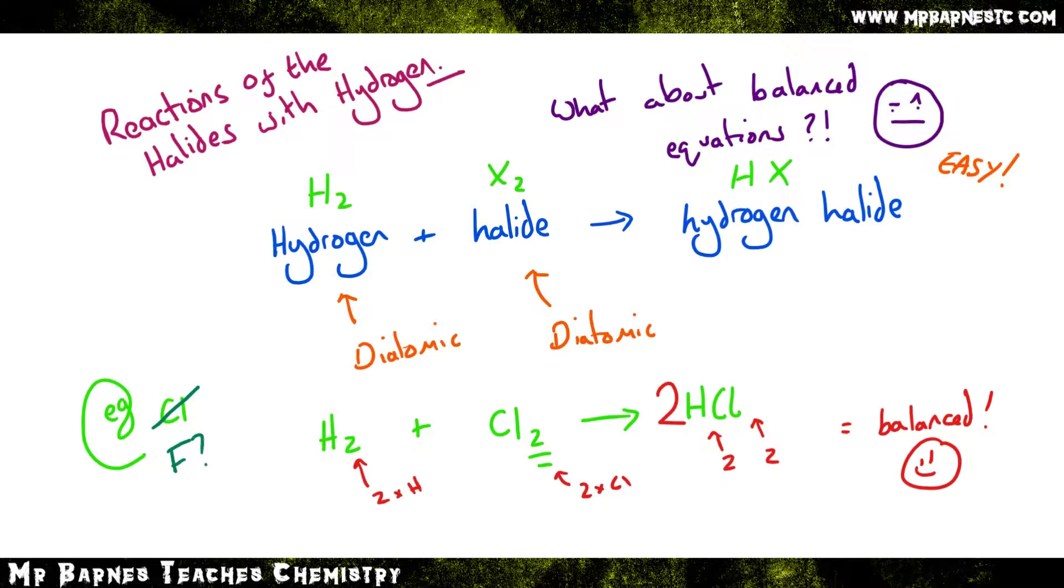And if you can learn just one example, it is exactly the same. So all you need to do is take out the Cl and replace it with F. So I get H2 plus F2 goes to 2HF.